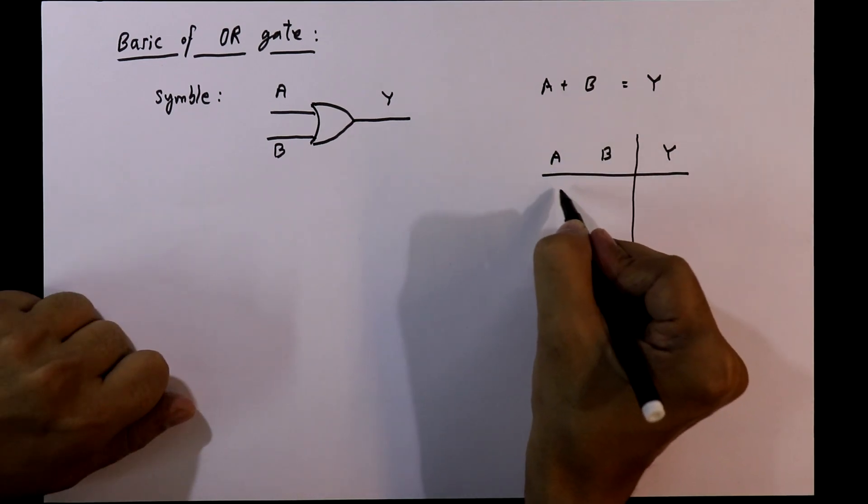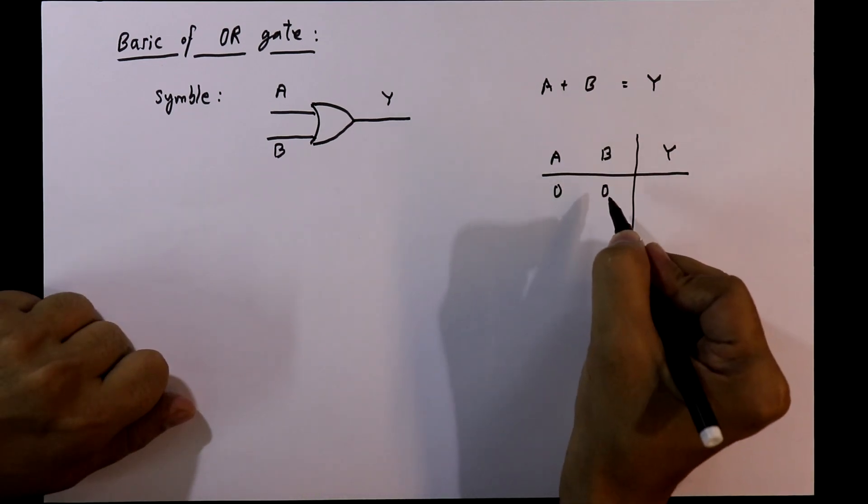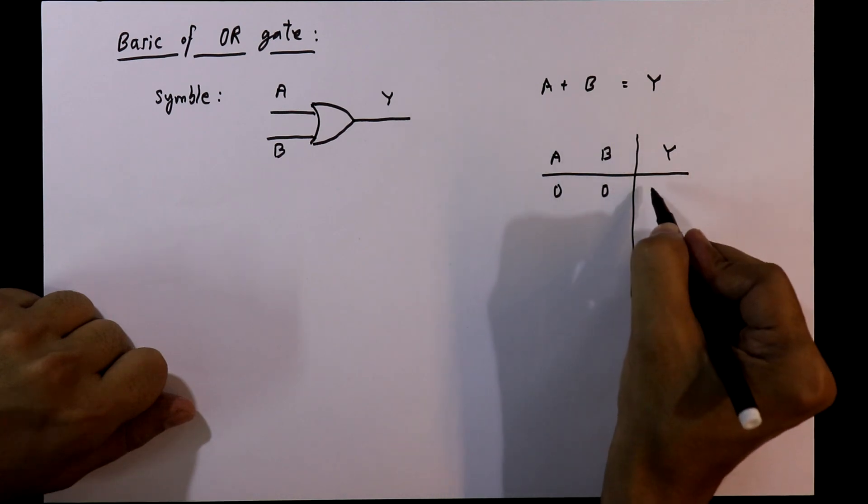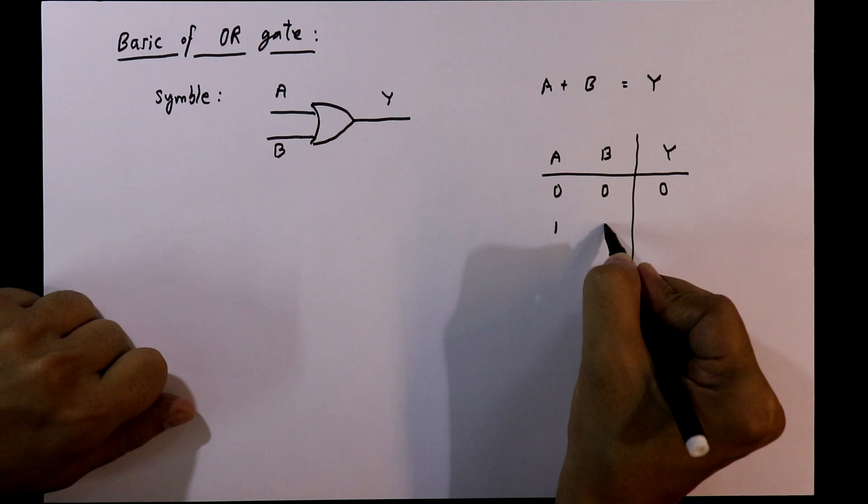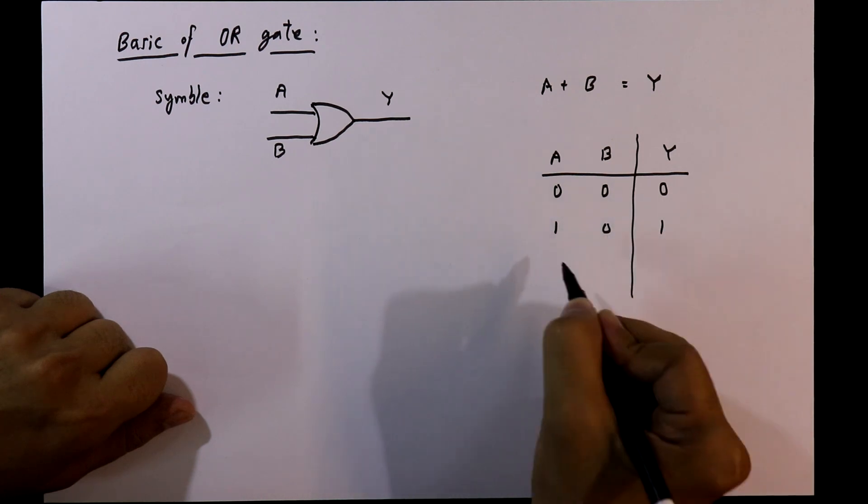If both the inputs are 0 or OFF, then the output will be 0. A is 1 and B is 0. Output will be 1.